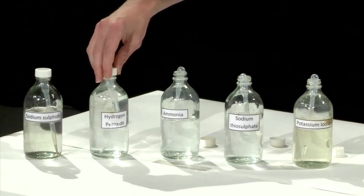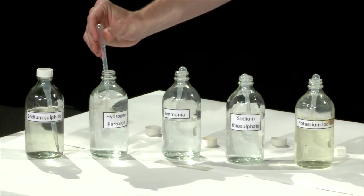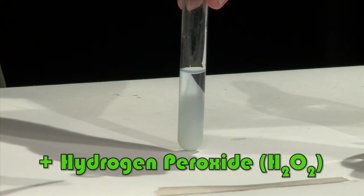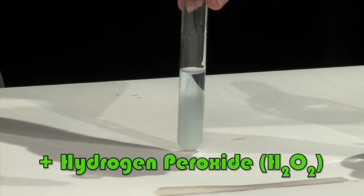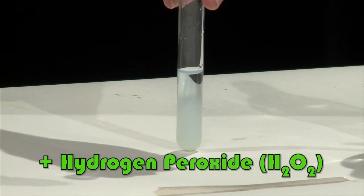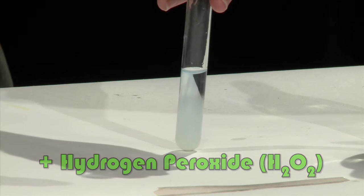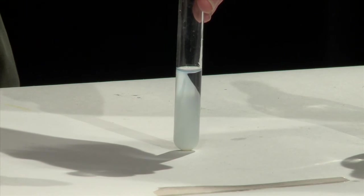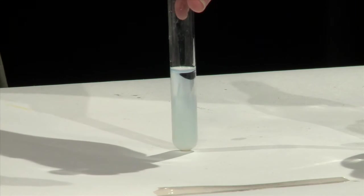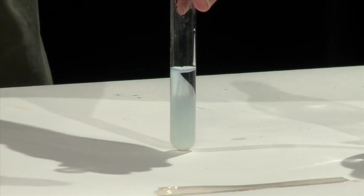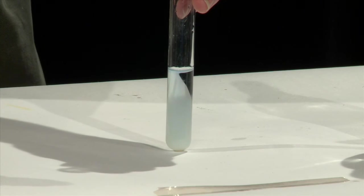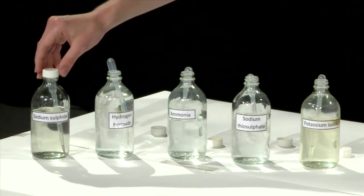Now add 1 drop of hydrogen peroxide, and watch very carefully for the slight change in color. The solution turns to a slightly darker blue color. If you're especially lucky, you'll notice a bubble of oxygen gas given off as well.